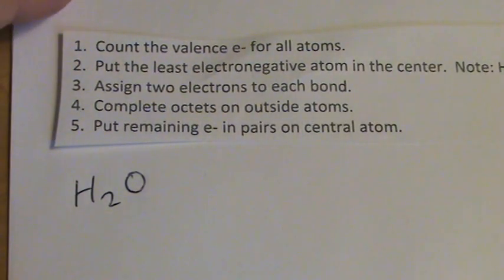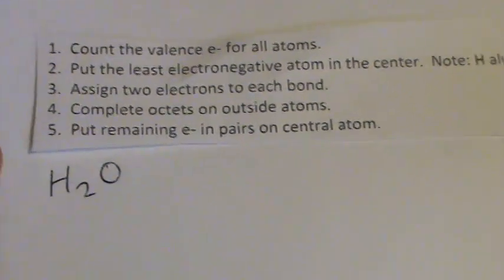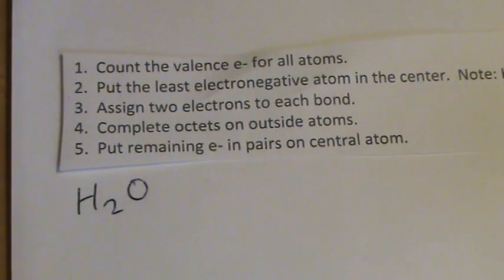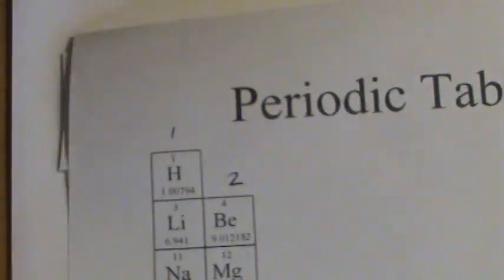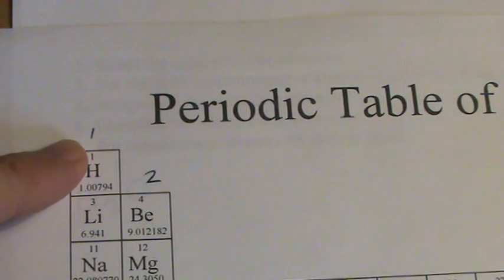What we want to find out first is how many valence electrons does water have? So I'm counting all the outer shell electrons, and I'll need my periodic table. Let's see, hydrogen's in group one, so it has one valence electron.